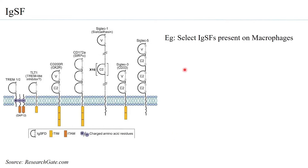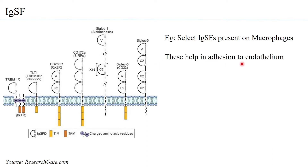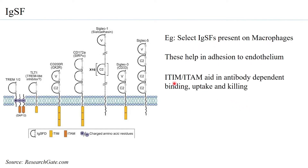For example, there are several IGSFs present on macrophages. These help in adhesion to the endothelium — macrophages can bind to the endothelium through the IGSFs. The ITIM and ITAM can aid in antibody-dependent binding, uptake, and killing.